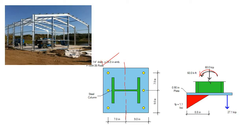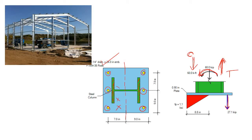This bending moment is converted into a compressive force and a tensile force. To transfer this tensile and compressive force, you use the flanges. To transfer the forces from the flange to the foundation, you place the anchor bolts outside of the flanges — not inside. Only then will the compressive force as well as the tensile force be properly carried from the column to the foundation.